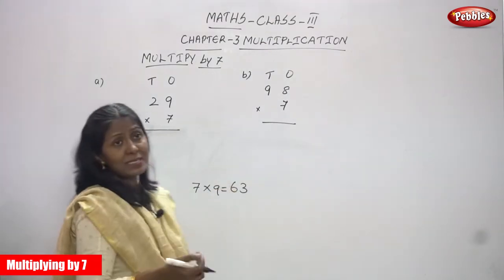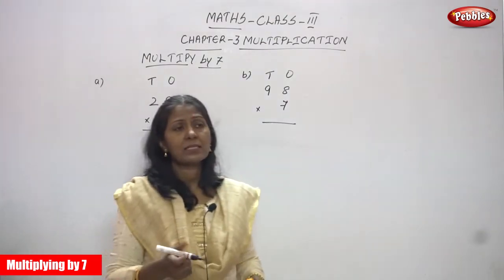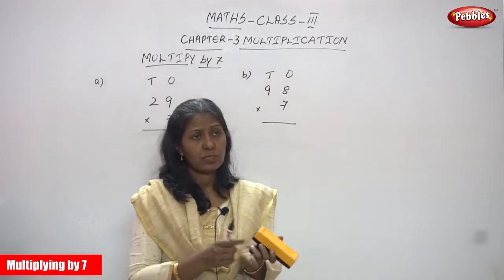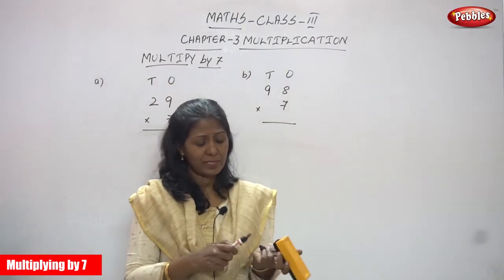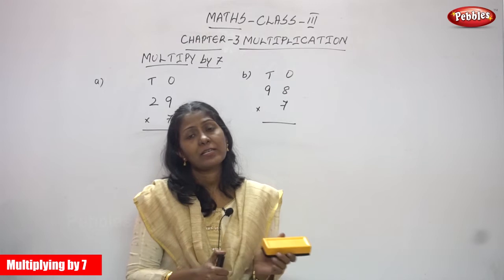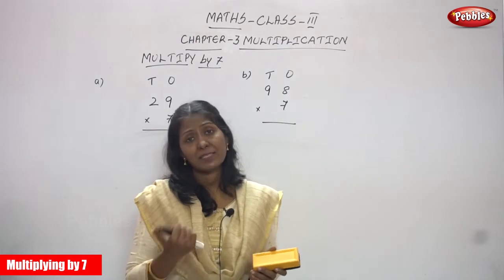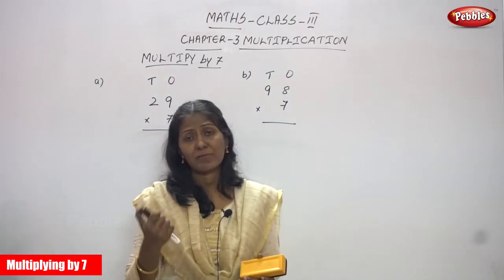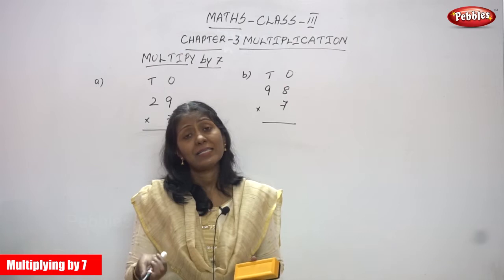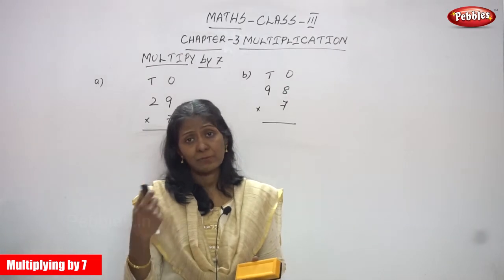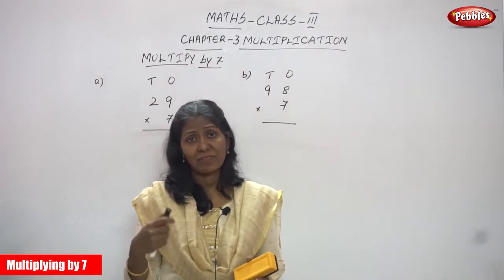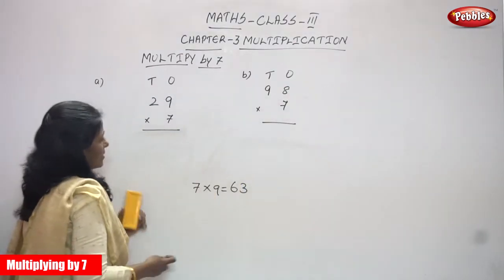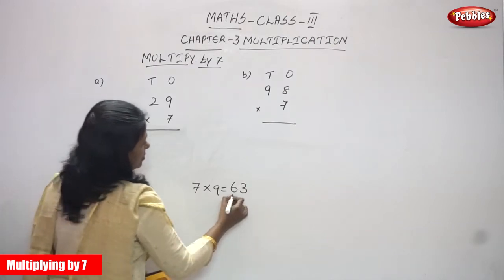You must say the 7th table up to 9: 7 ones are 7, 7 twos are 14, 7 threes are 21, 7 fours are 28, 7 fives are 35, 7 sixes are 42, 7 sevens are 49, 7 eights are 56, 7 nines are 63. So 7 nines are 63.